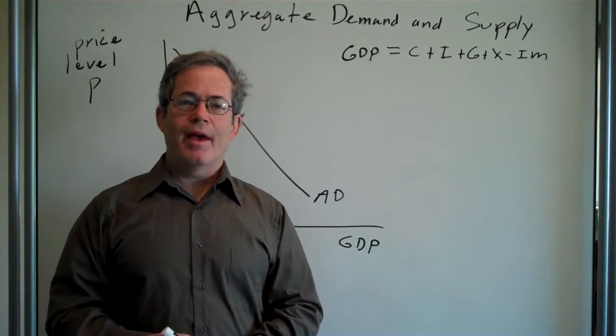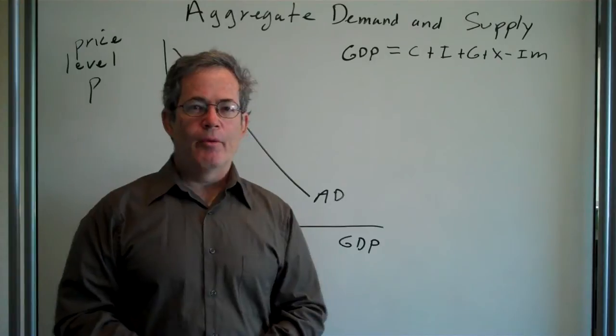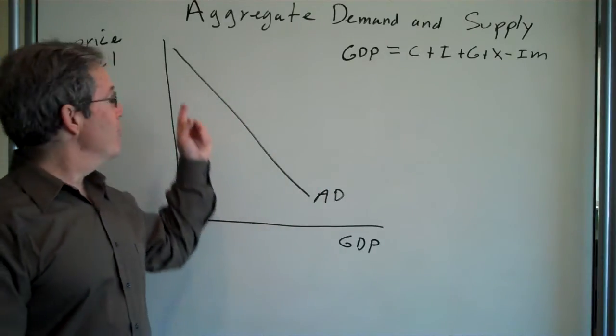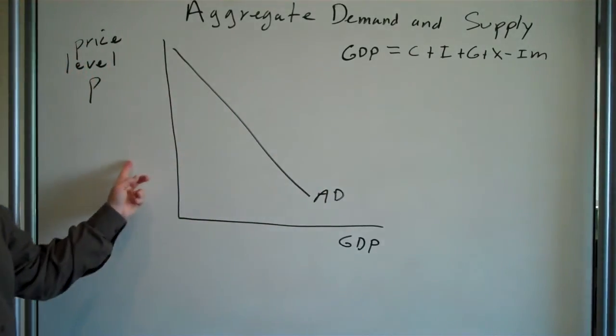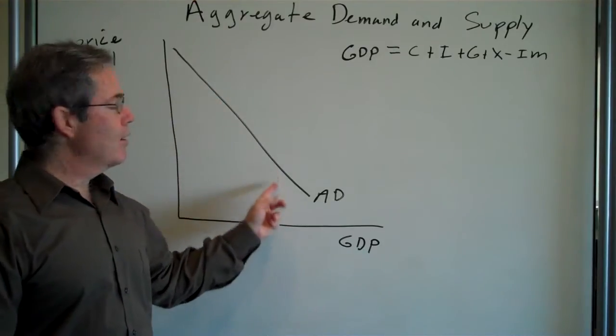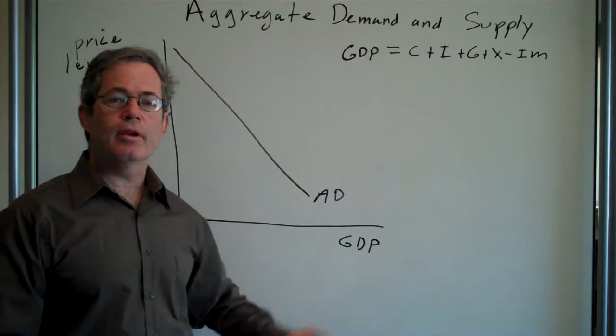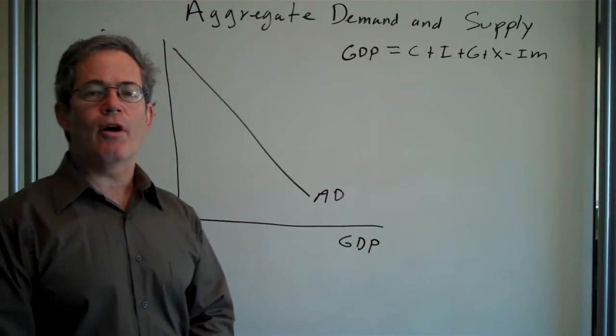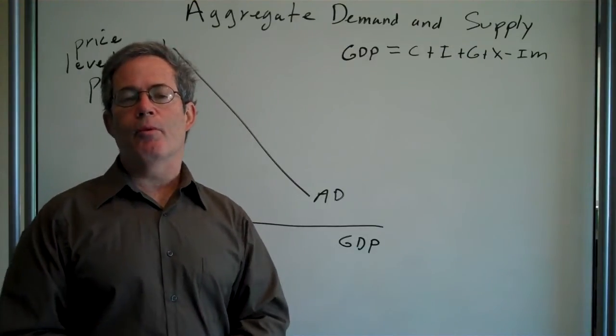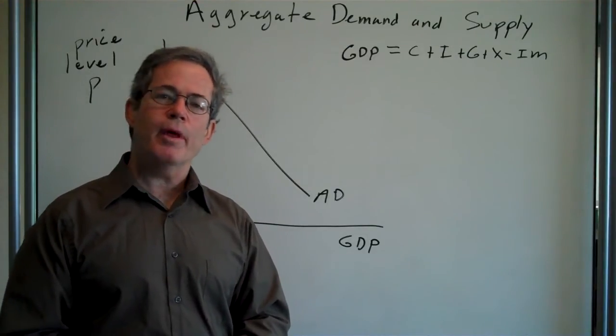Now, we're talking about aggregate demand and aggregate supply. Remember that when prices fall, aggregate demand goes up. Demand for GDP goes up because when prices fall, households and others' wealth goes up and they want to spend more money.